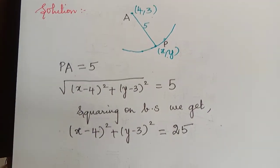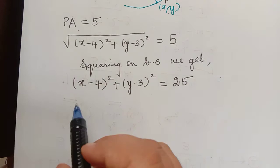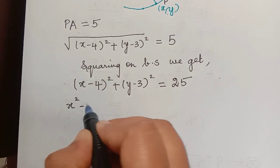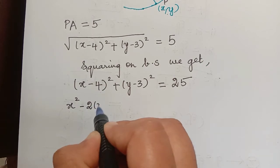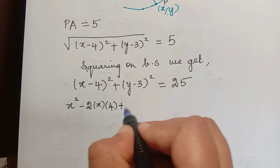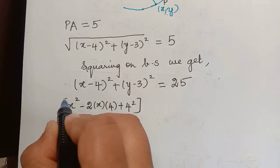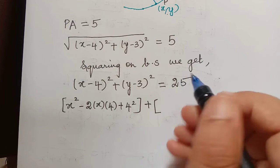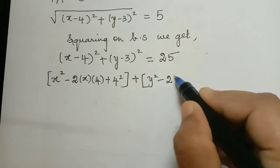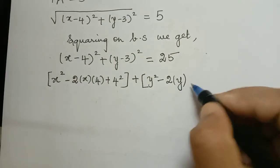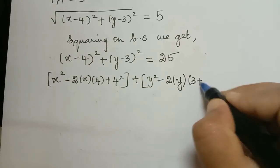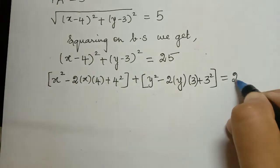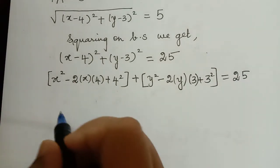Now let us expand this by using (A minus B) the whole squared formula. So it will be x squared minus 2 multiplied with x multiplied with 4 plus 4 squared plus, now this can be expanded by using (A minus B) the whole squared formula. And so it will be y squared minus 2y multiplied with 3 plus 3 squared is equal to 25. Let us simplify this further.